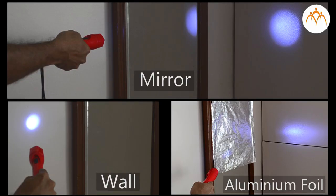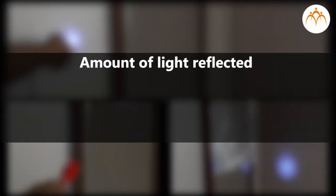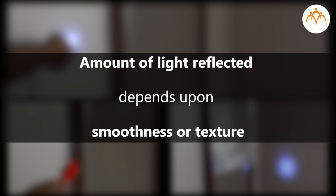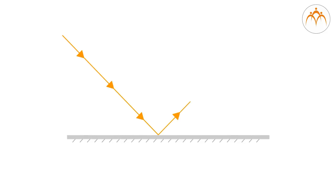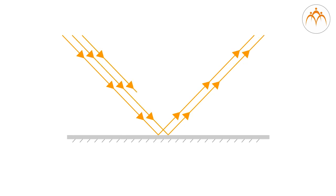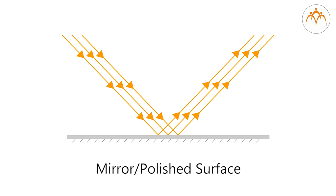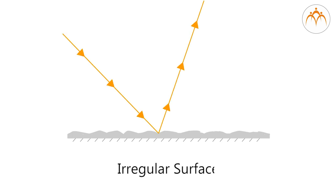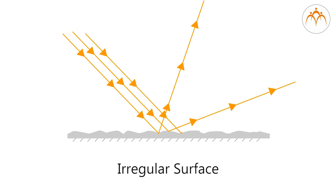The amount of light reflected by an object and how it is reflected is highly dependent upon the smoothness or the texture of the surface. When the surface is smooth and its imperfections are smaller than the wavelength of the incident light, as in the case of the mirror, virtually all the light is reflected equally. However, in the real world, most objects have irregular surfaces that exhibit diffuse reflection, with the incident light being reflected in all directions.